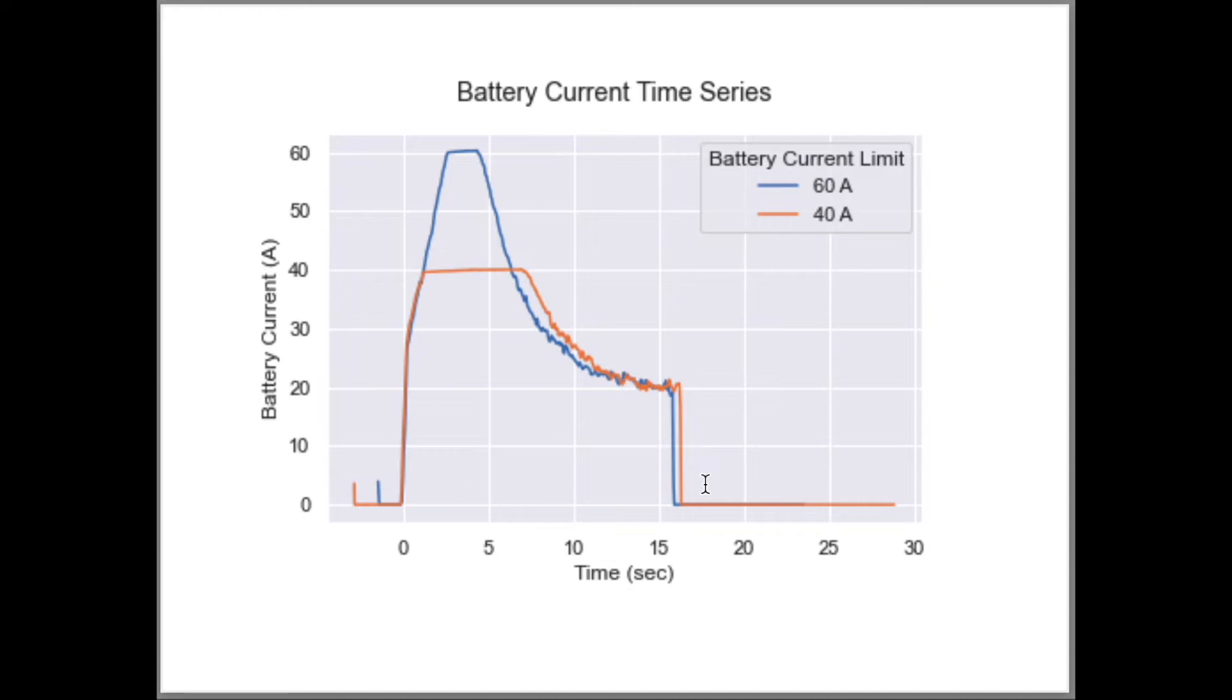We can see our predictions in the battery current time series. The battery current rises and levels off at the maximum value of either 40 amps or 60 amps and then begins to decrease as the motor voltage starts limiting the motor current.